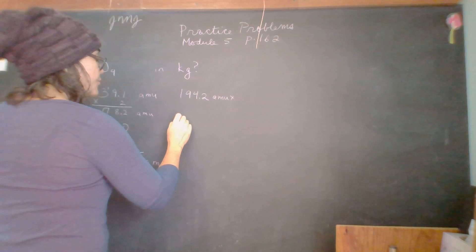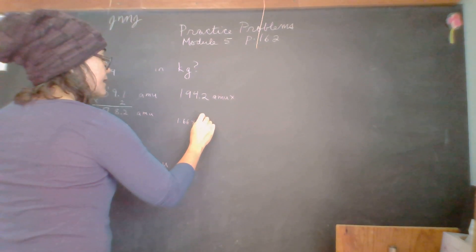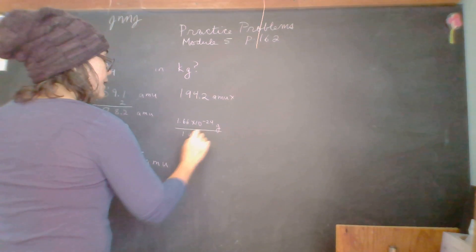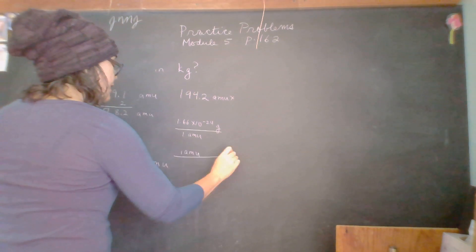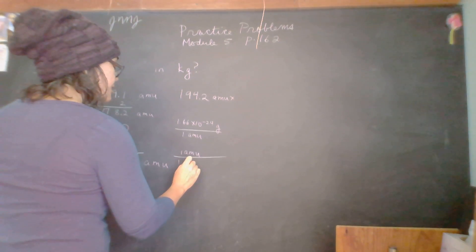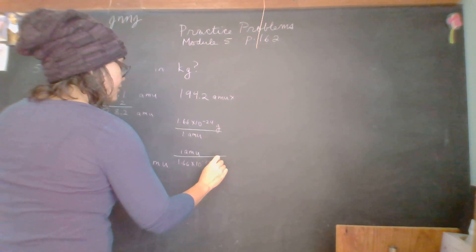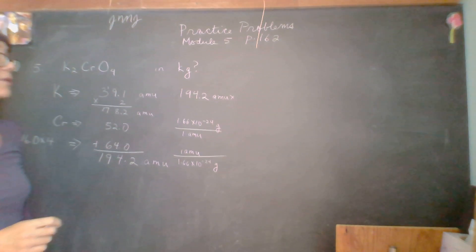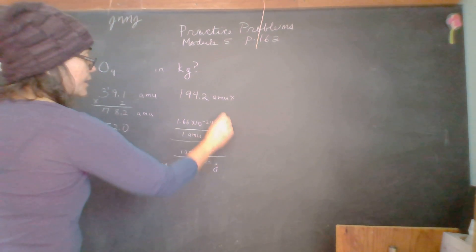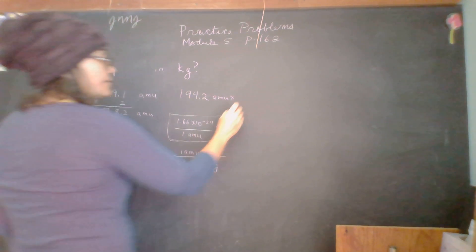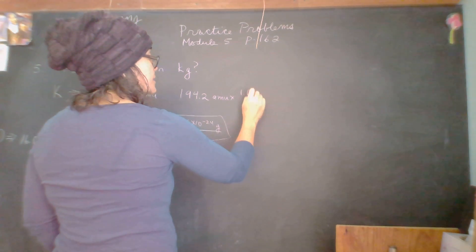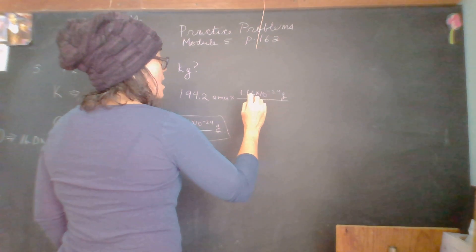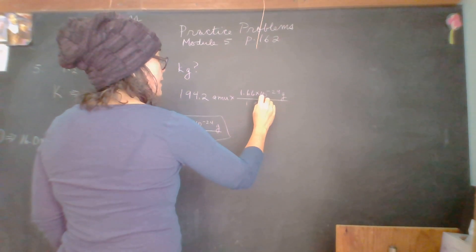So now we're going to use our conversion factors. So as we said before, it's 1.66 times 10 to the negative 24th grams per 1 AMU or 1 AMU times 1.66 times 10 to the negative 24th grams. So which one of these two conversion factors will we be picking, Martin? I want the first one. This one, that's right, because it will give us an answer with grams.